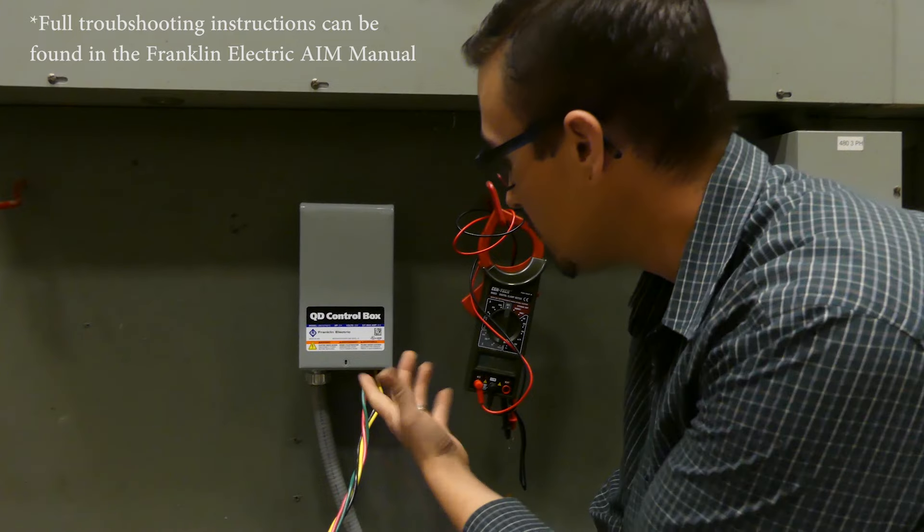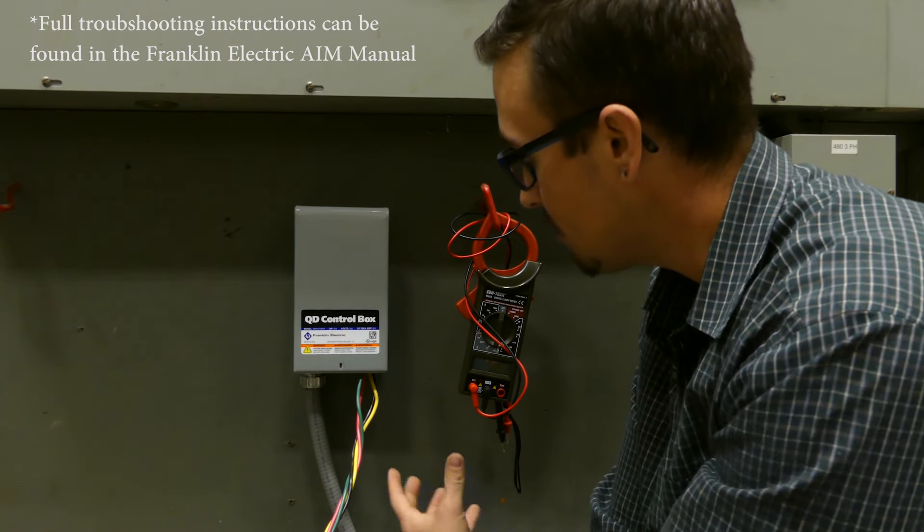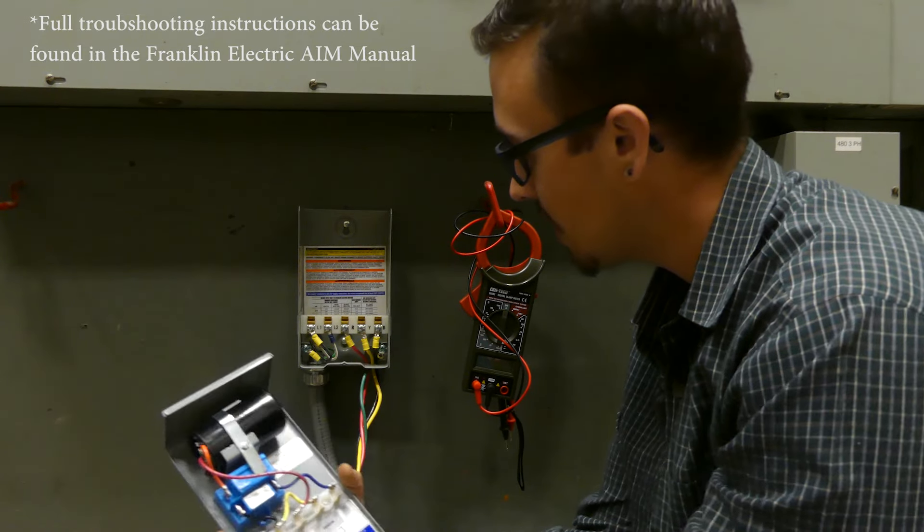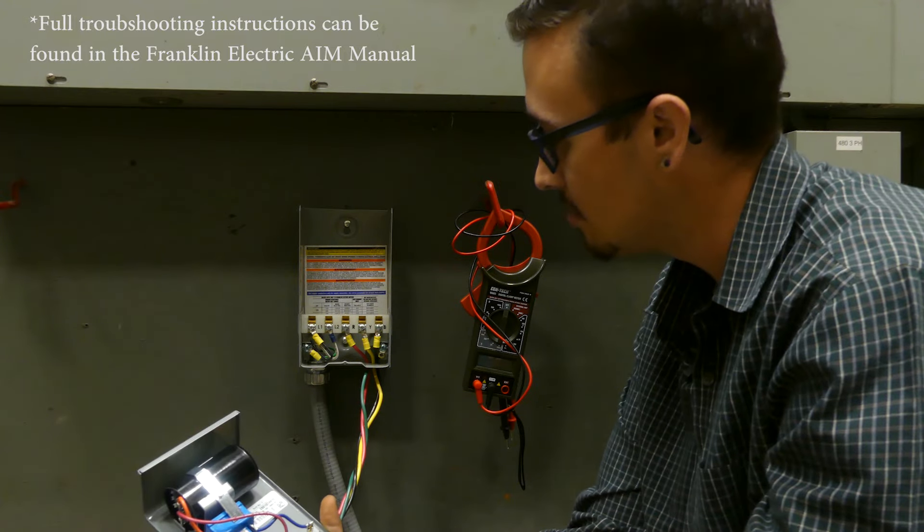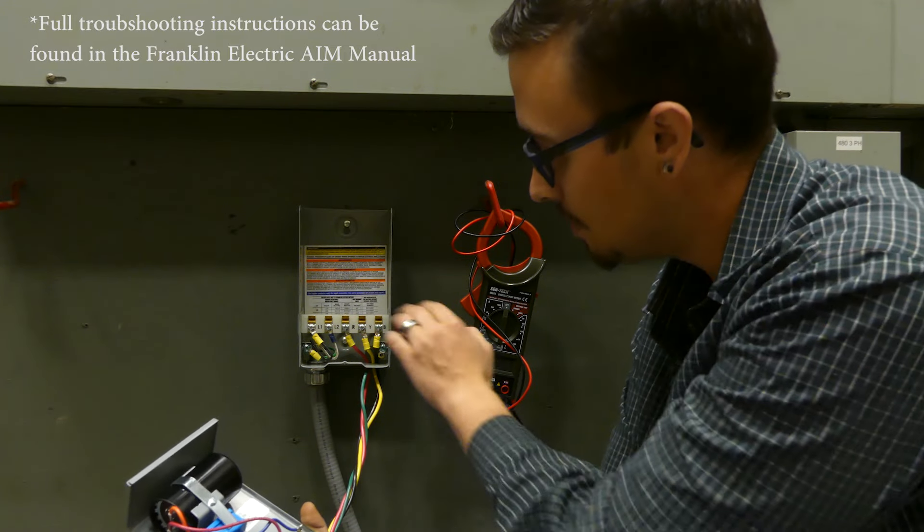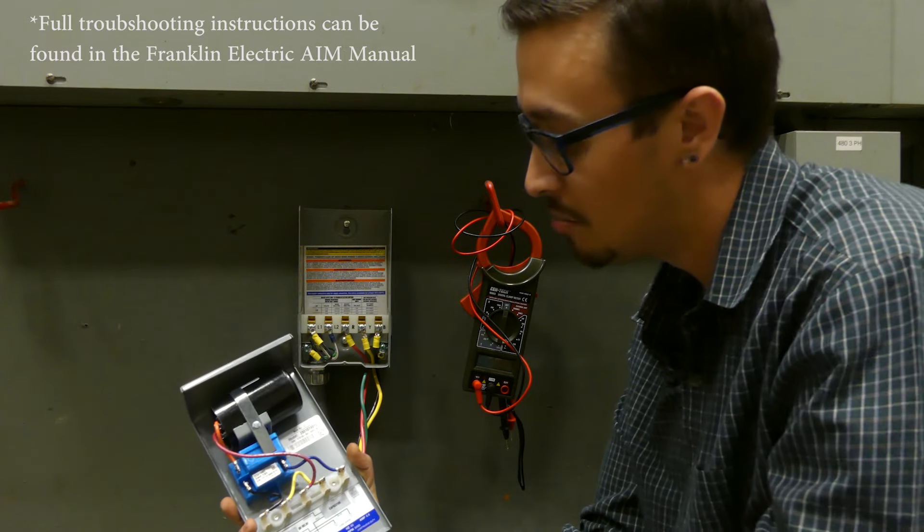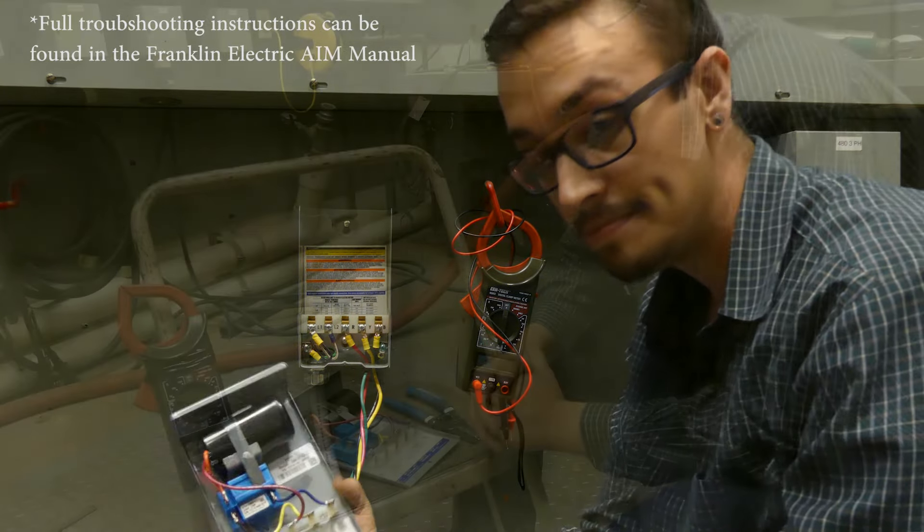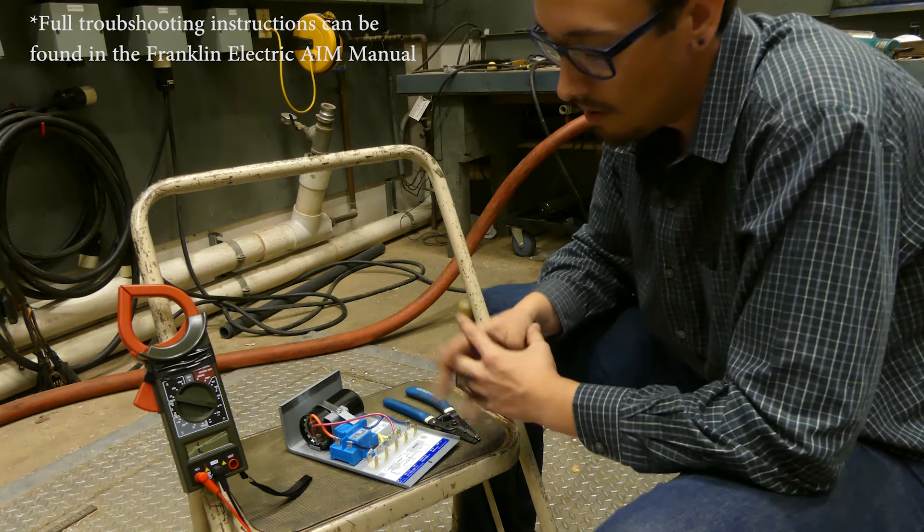The first thing we want to do when troubleshooting a QD control box is remove the control box. Then we've got just the terminal strips where your wires are landed, and that'll come into play later in the video when we talk about testing voltage. At this point, we're just going to test the components inside the QD control panel. We've got our QD control box pulled off the wall, over at the workbench with the meter ready to go.